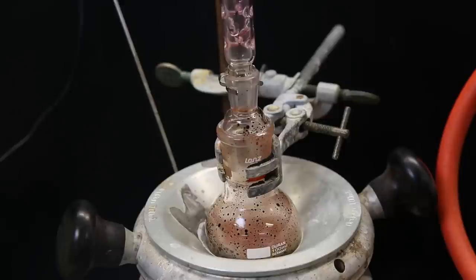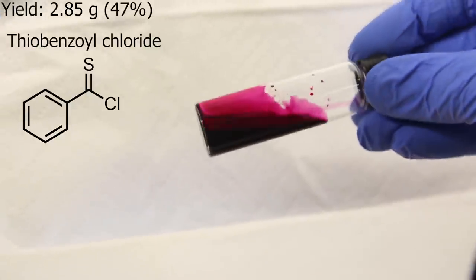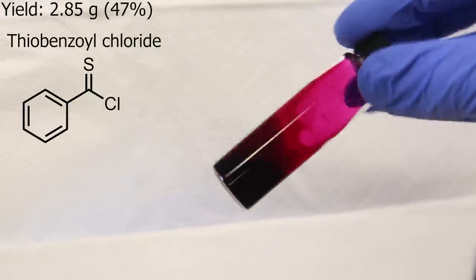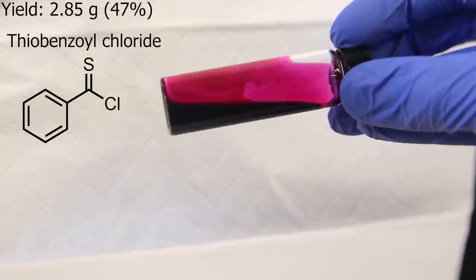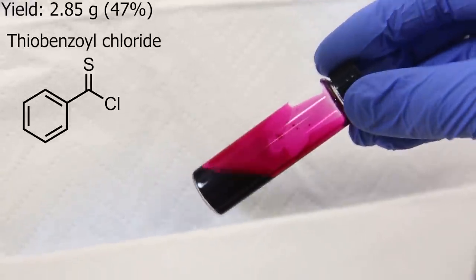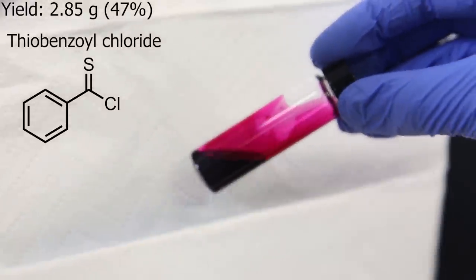I transferred all of the product to a vial, and the total yield turned out to be 2.85g, which is 47%. This is exactly the same as the paper I was following. Besides being pretty, thiobenzoyl chloride is also useful as a reagent for making thionyl esters, in a simple way.